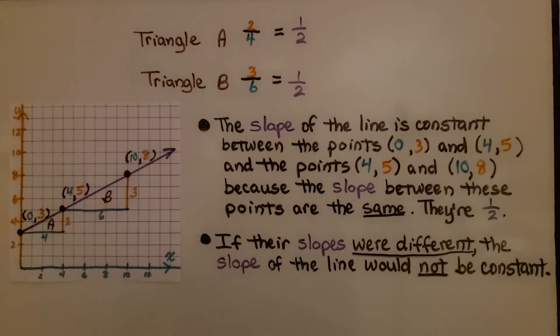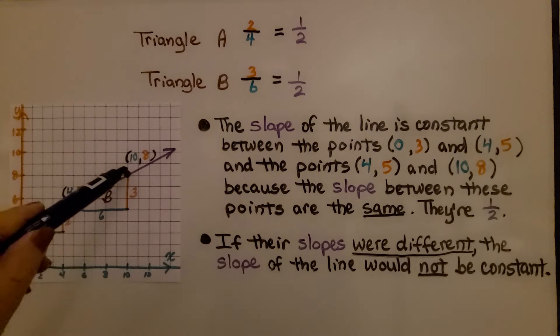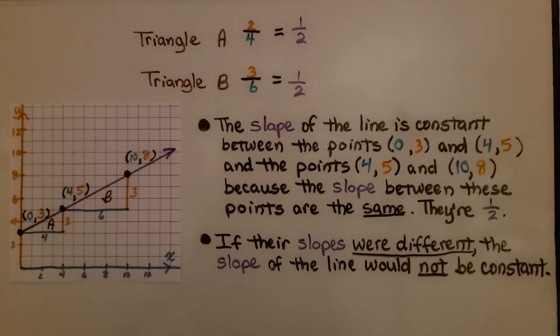The slope of the line is constant between the points 0 for x and 3 for y, and 4 for x and 5 for y, and the points 4 for x and 5 for y, and 10 for x, 8 for y. Because the slope between these points are the same. They're 1 half. If their slopes were different, the slope of the line would not be constant.